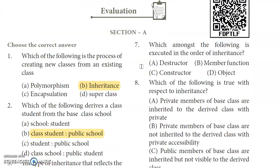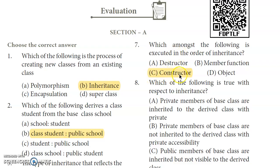Seventh question: Which amongst the following is executed in the order of inheritance? Options include destructor, constructor, and member functions of objects. The answer is Constructor — constructors are executed in the order of inheritance.